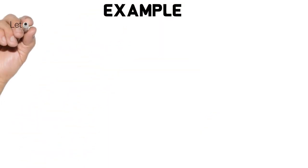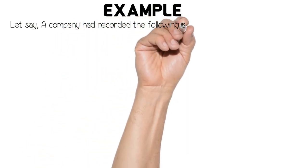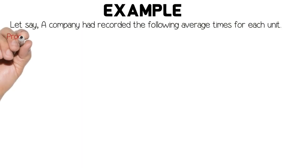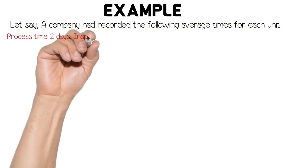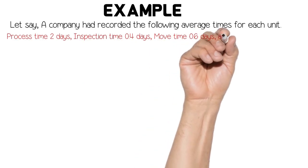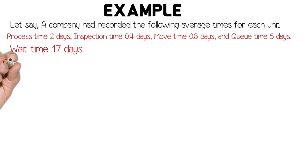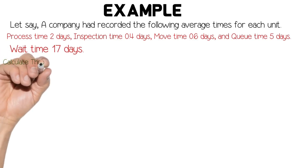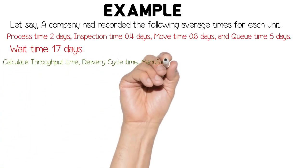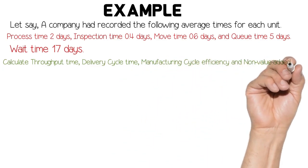Let me explain this concept with the help of an example. Let's say a company has the following average times recorded for each unit: process time 2 days, inspection time 0.4 days, move time 0.6 days, queue time 5 days, and wait time 17 days. Calculate throughput time, delivery cycle time, manufacturing cycle efficiency, and non-value-added time.